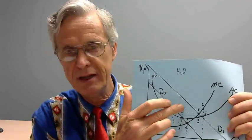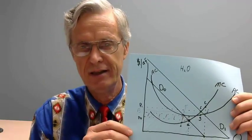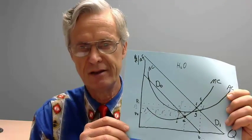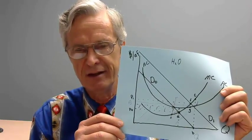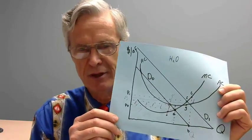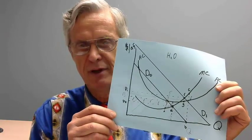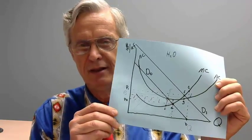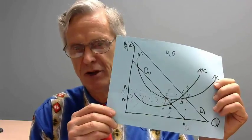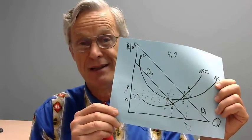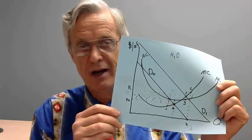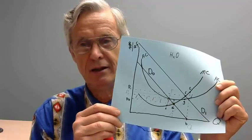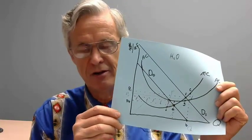Point M is where D0 hits the average cost line. At that price — which is a little bit below P sub J — your books balance, but you have a deadweight loss, because in this case you're actually under-providing water. With demand level D0, marginal cost is below average cost.